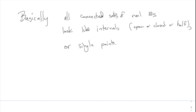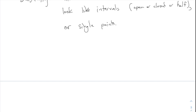This means all along I was just talking about intervals. That might seem unsatisfying — why didn't we just say 'intervals' from the beginning? The answer is that the separation definition using closures becomes very important in other settings. In R² for example, connected sets can be much more complicated than just intervals — there are many more types of connected sets in higher dimensions or other spaces entirely.